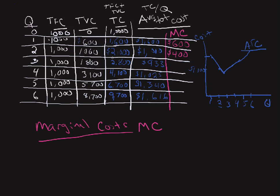To go from two to three, we get an increase in total cost from two thousand to eight hundred, and so we have a marginal cost of eight hundred. How about here? As we go from three to four, we have a total cost from twenty eight hundred to forty one hundred, so we have a marginal cost of forty one hundred minus twenty eight hundred, which is thirteen hundred.